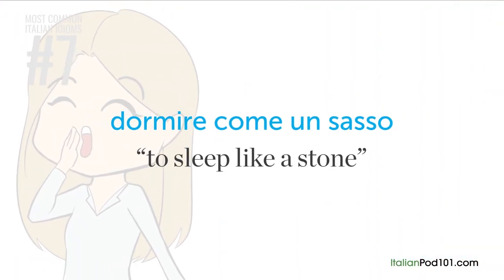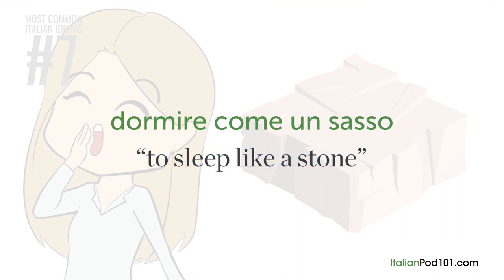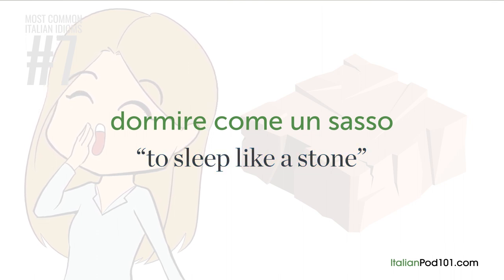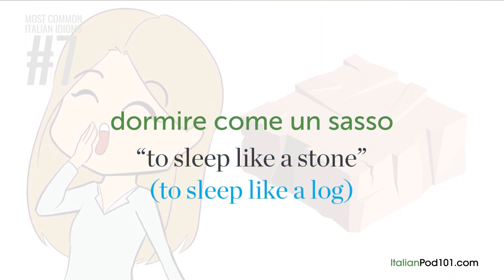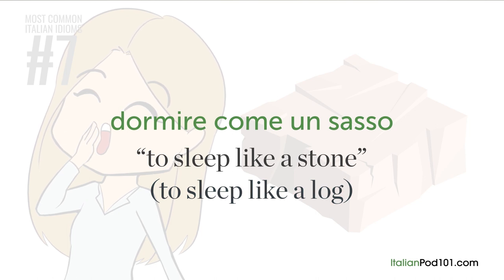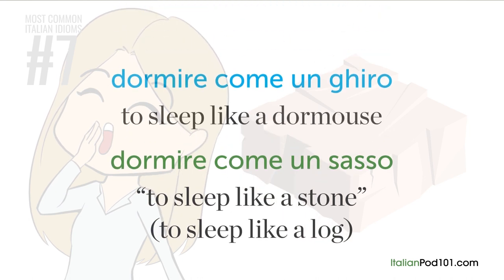Dormire come un sasso — 'to sleep like a stone.' This idiom is basically the same as the English 'to sleep like a log' — it means someone is sleeping so soundly that they look like an inanimate object. You can also say 'dormire come un ghiro,' meaning 'to sleep like a dormouse.'